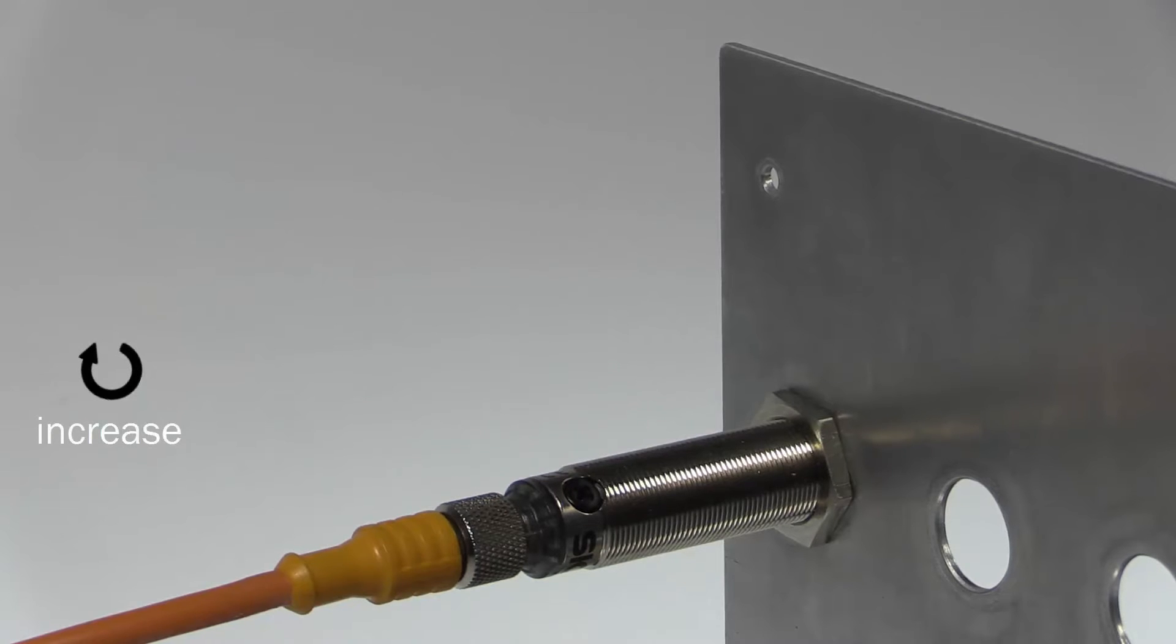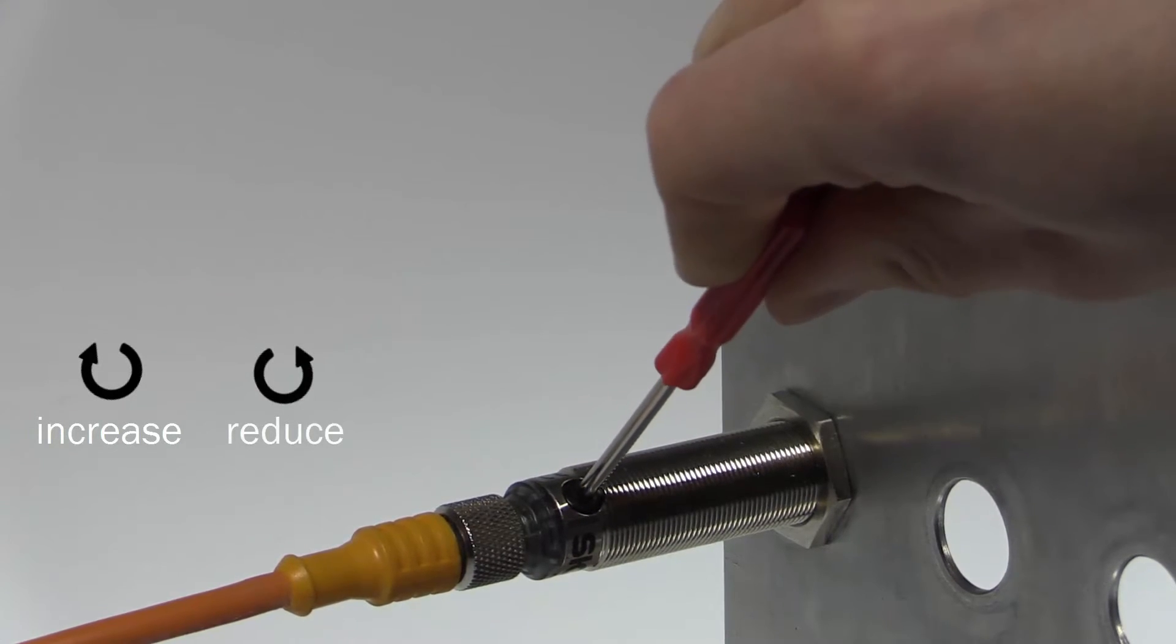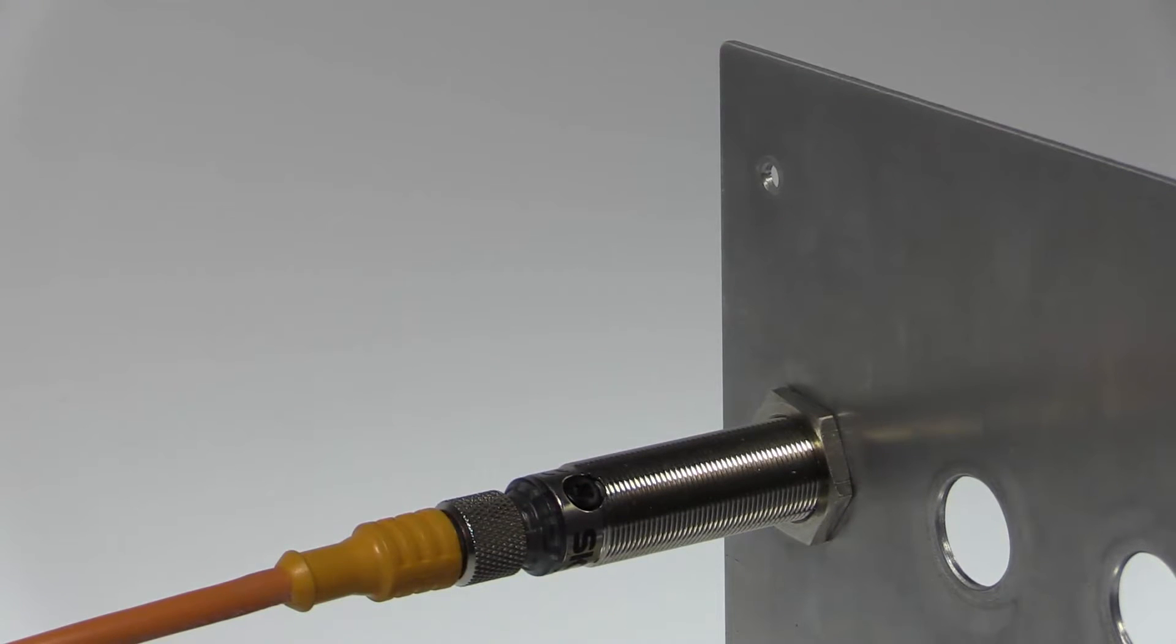Clockwise rotation will increase the sensing range and counterclockwise rotation will reduce the sensing range. The green indicator LED shows the power-up status of the sensor and the orange LED shows the switching output.